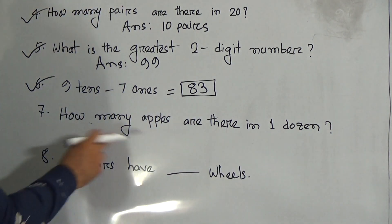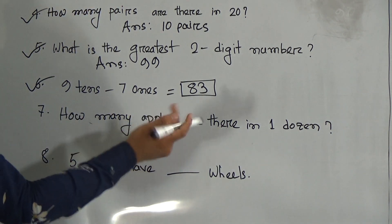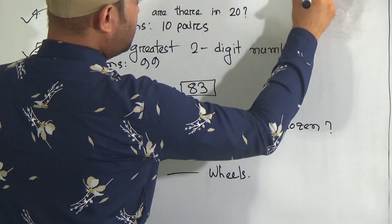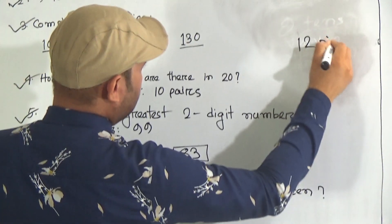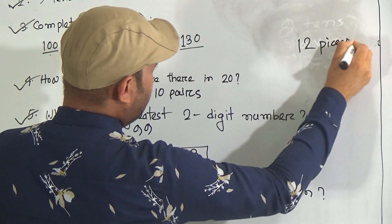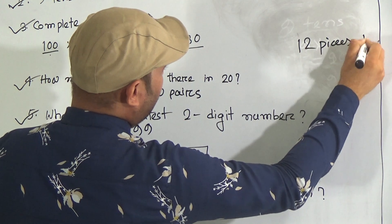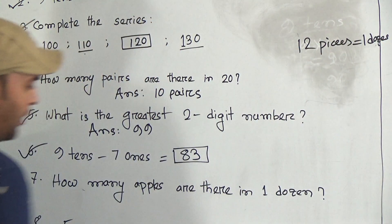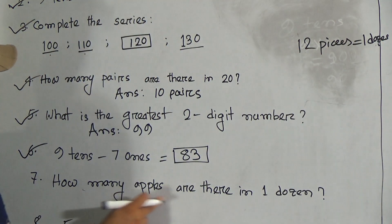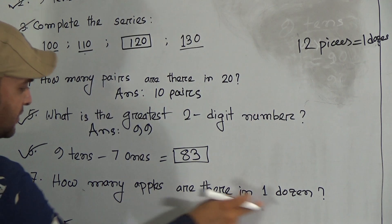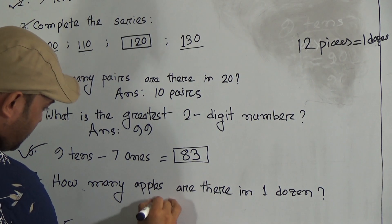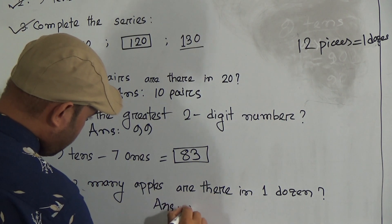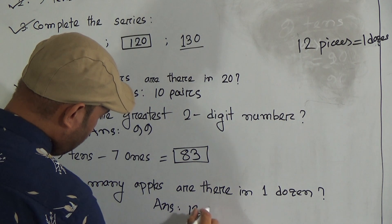Question number 7: how many apples are there in one dozen? We know that 12 pieces equal one dozen. So how many apples are there in one dozen? The answer is 12 apples.